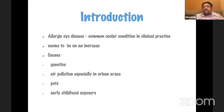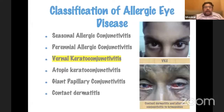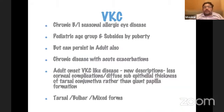Allergic eye disease is a very common condition and generally you can have a genetic basis to it. You could have pollution which would cause most of the cases that we see in India. Looking at classification, you have seasonal, perennial, VKC, AKC, and GPC. Today we are going to be talking about VKC, specifically looking at recalcitrant forms of the disease.